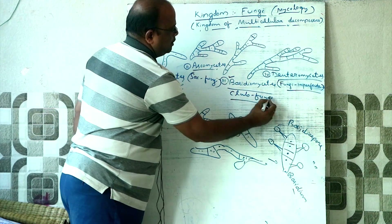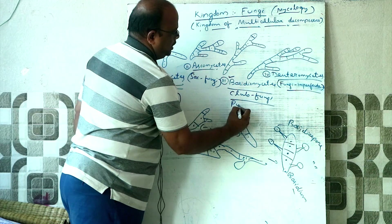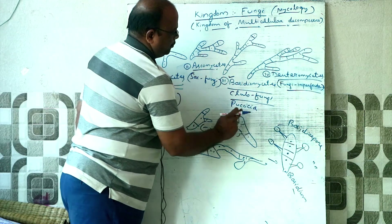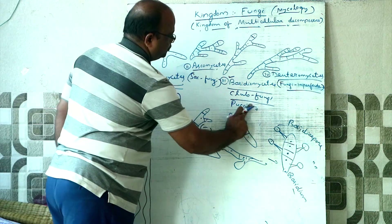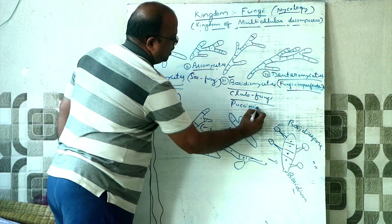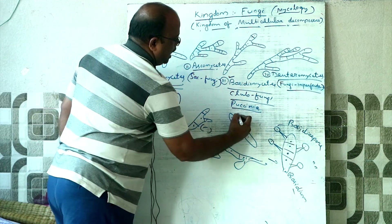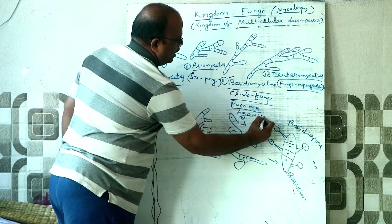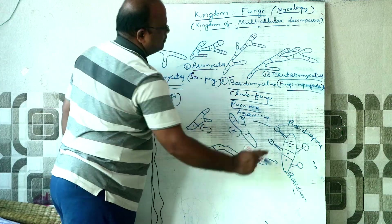Common examples of Basidiomycetes include Puccinia and Agaricus, which is the mushroom — an edible mushroom.